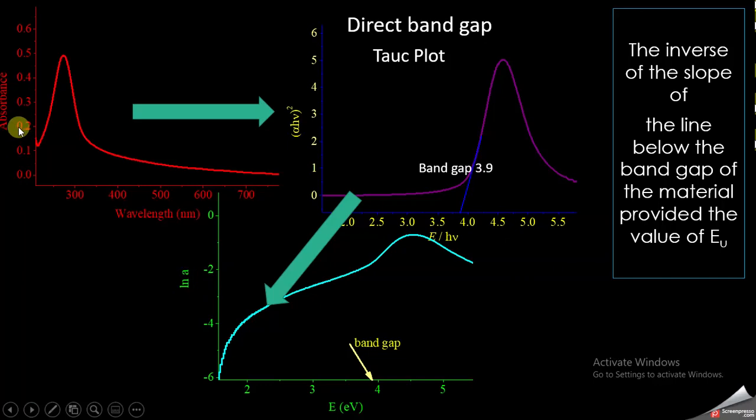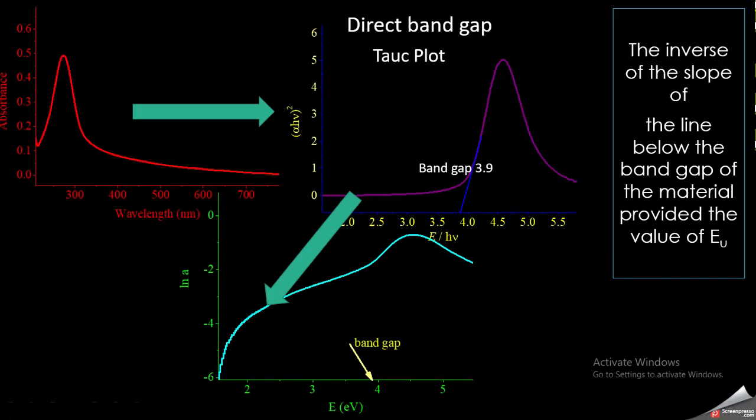Once we have the band gap, we plot ln(α) versus energy in electron volts. The ln(α) values are obtained by taking the natural log of the absorbance values from the spectrum, and the energy values are obtained by converting wavelength using a simple relation covered in another video. When you plot ln(α) versus energy, you get a plot from which you can calculate the Urbach energy.